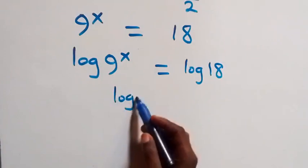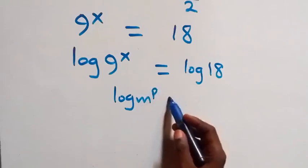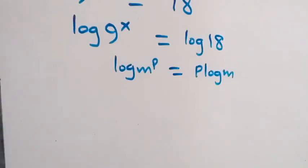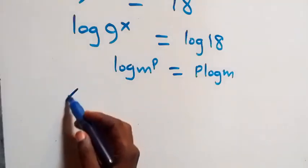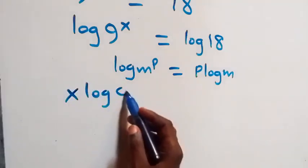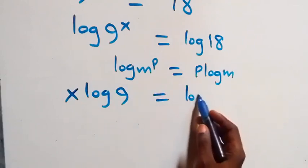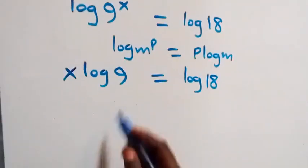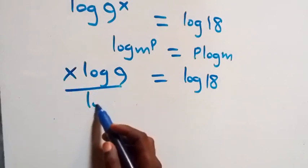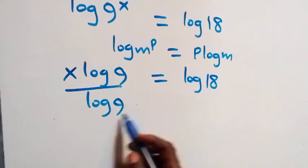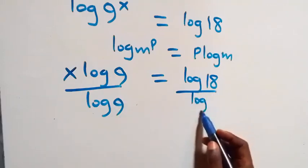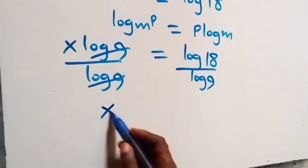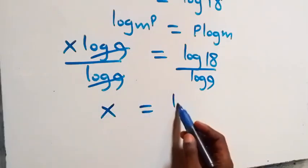We apply the power law of logarithms, where log of m raised to power p is the same as p times log m. So what we have here becomes x·log 9 equals log 18. The next step: we divide both sides by log 9. The log 9 terms cancel each other, leaving x.